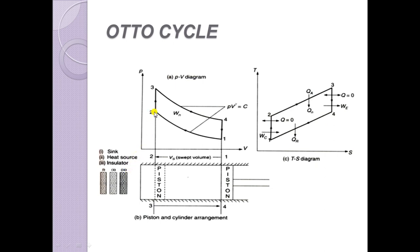The second process is the constant volume heat addition process taking place from point 2 to point 3. The volume is maintained constant by locking the piston at position 2 firmly. During this process, heat is added using a heat source placed near the cylinder head. The third process is from point 3 to point 4, which is the isentropic expansion process. Expansion is carried out by moving the piston from point 3 to point 4, and since the process is isentropic, no heat transfer occurs — so a heat insulator is placed near the cylinder head.